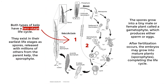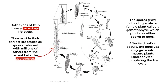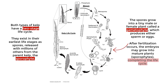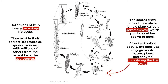Both types of kelp have a two-stage life cycle. They exist in their earliest life stages as spores, released with millions of others from the parent kelp, the sporophyte. The spores grow into a tiny male or female plant called a gametophyte, which produces either sperm or eggs. After fertilization occurs, the embryos may grow into mature plants, sporophytes, completing the life cycle.